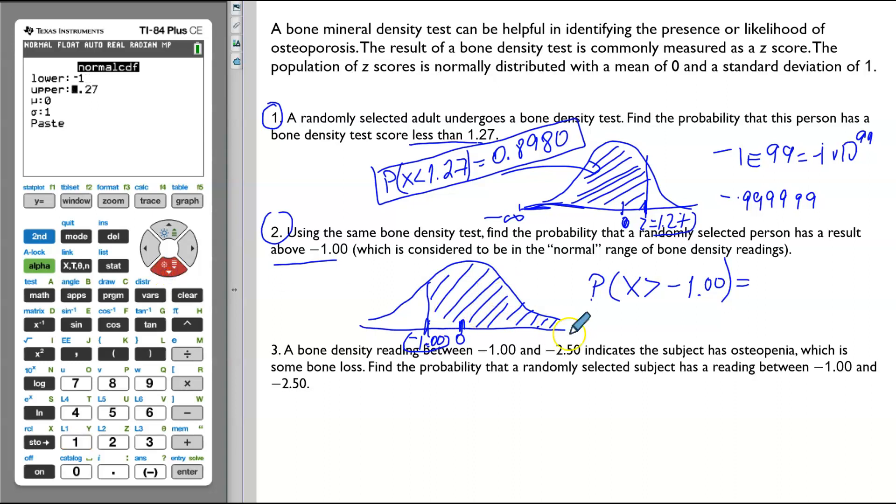Upper limit. Now, upper limit is to the very, very right. So, you can type 1E99 or you can type 99999 to indicate the large number way, way, way to the right. I'm going to type 99999, mean 0, standard deviation 1.